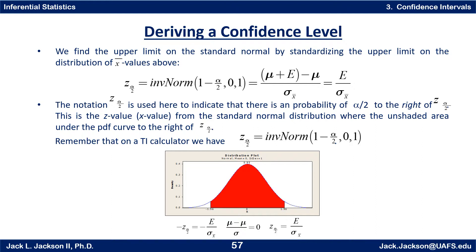The notation z sub alpha over 2 is used to indicate that there's a probability of alpha over 2 to the right of z sub alpha over 2. This is the z-score from a standard normal distribution where the unshaded area under the PDF curve to the right of z alpha over 2 is alpha over 2. Remember that on the TI calculator, we have to put in the probability to the left, so we use inverse norm of 1 minus alpha over 2.